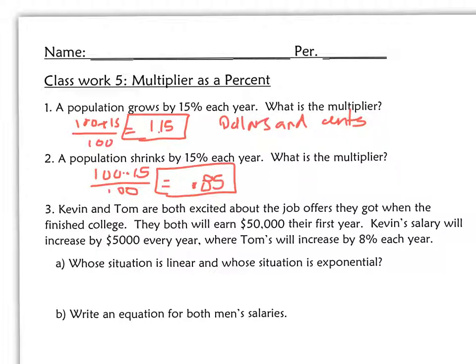It says here Kevin and Tom are both excited about new job offers that they got when they finished college. They both will earn $50,000 their first year. Kevin's salary will be increased by $5,000 per year, where Tom's will increase by 8% a year. Whose situation is linear, and whose is exponential?